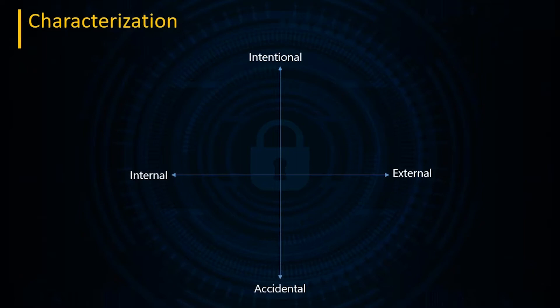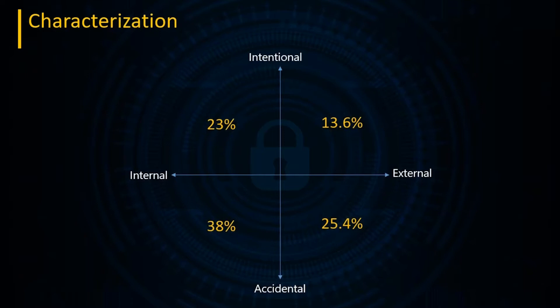You characterize a risk in terms of whether it's intentional or accidental, and external or internal. A lot of us would guess that the majority of breaches happen in the intentional external quadrant — but it turns out that's actually not the case. Internal accidental accounts for 38% of the breach characterizations we see. The 'accident' is usually human beings or a lack of communication — for example, a network segmentation project that wasn't fully completed or maintained.